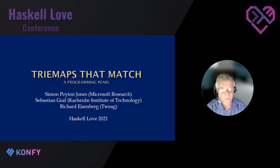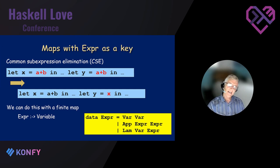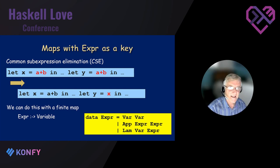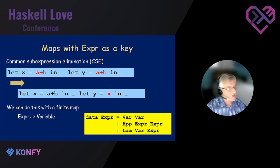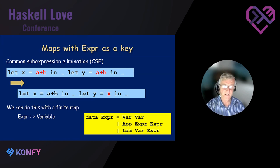We know all about finite maps — containers that map keys to values — and we use them a lot. But sometimes you want keys that have more structure than just an integer or a string. Here's an example inside GHC: a very simple common sub-expression elimination pass. When you see a let with another let nested inside it — let for x and let for y — where y's right-hand side is the same as x's, you can replace that binding with x.